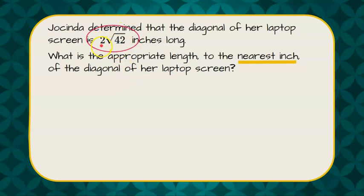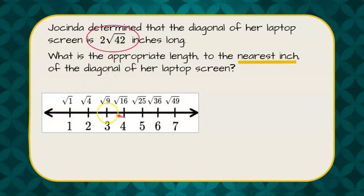So we have to first understand that this is 2 multiplied by the square root of 42. The square root of 42 is not a perfect square, so using a number line listing my perfect squares, I know that the square root of 42 lies between the square root of 36 and square root of 49, so between 6 and 7.